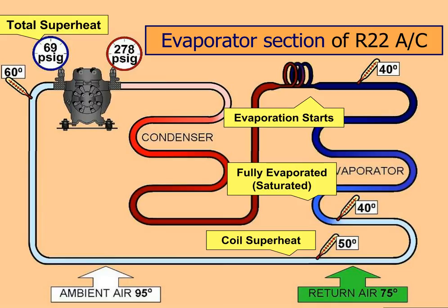Evaporation starts at the metering device where the refrigerant is saturated at 40 degrees, changing state and boiling off continuously, absorbing a tremendous amount of heat energy. As it gets down to the bottom of the evaporator it's now completely boiled off and 100% vapor, still at 40 degrees.